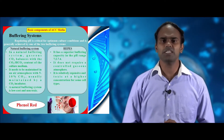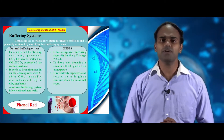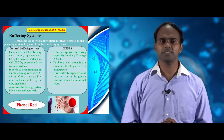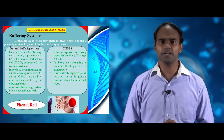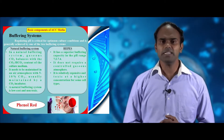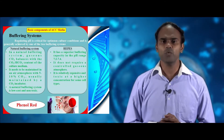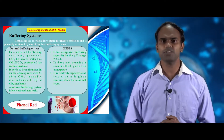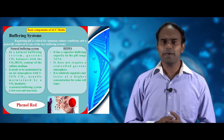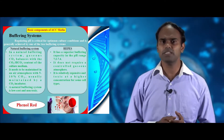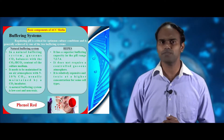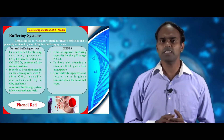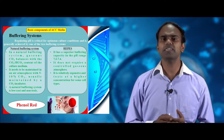Regulating pH is generally achieved by two systems: natural buffer media and HEPES. In natural buffer media, gaseous carbon dioxide balances with carbonate and bicarbonate present in the animal cell culture media. It needs to be maintained in an air atmosphere with 5-10% carbon dioxide, which is maintained in a CO2 incubator. This natural buffering system is low cost and less toxic.